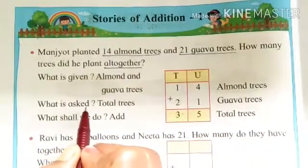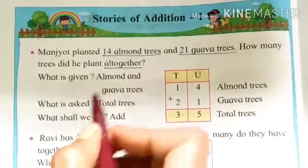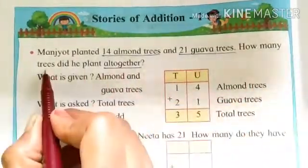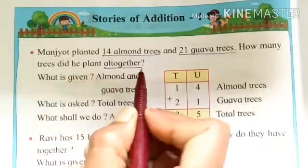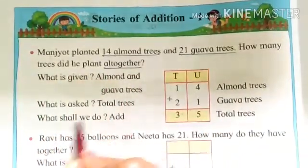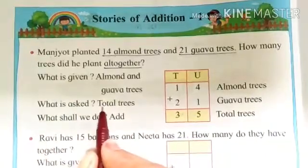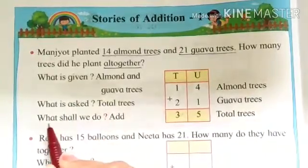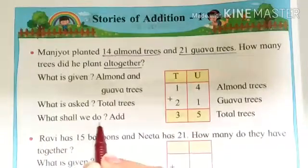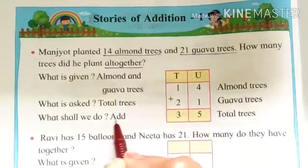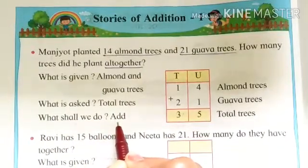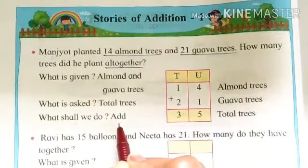Then what is asked? Poocha kya gaya hai? How many trees did he plant all together? Means total trees. And for getting total, what we have to do? What shall we do? Hame kya karna hai? Add. Answer is add. Means hum ko kya karna hai? Plus karna hai.